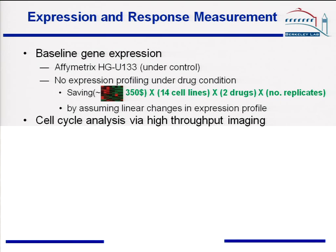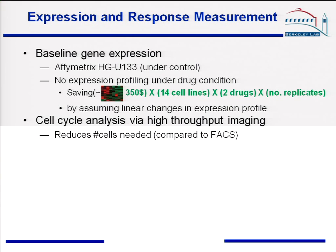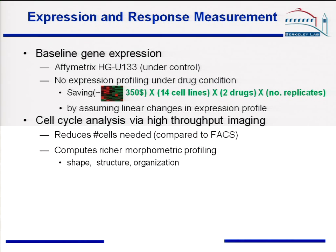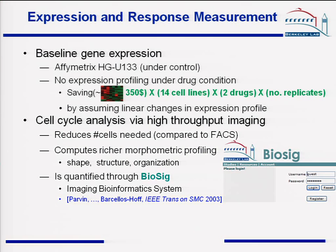Third, we have used high-throughput microscopy to measure the cell cycle data. Because it reduces the number of cells needed compared with more traditional approaches, it can compute much richer morphometric profiles and organization of the cells. We have actually used BioSeq and some developmental tools for cell cycle analysis.